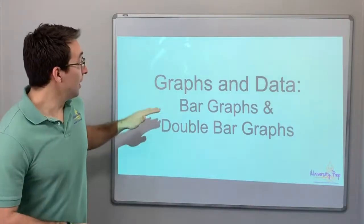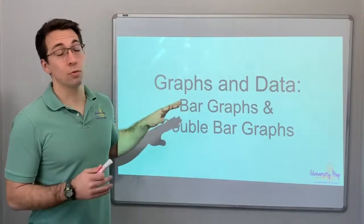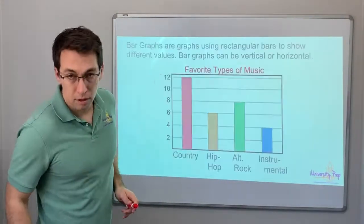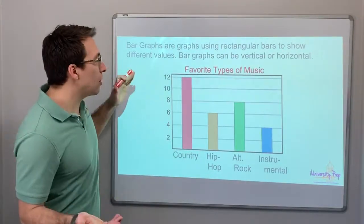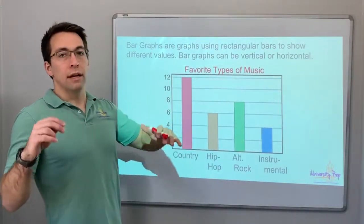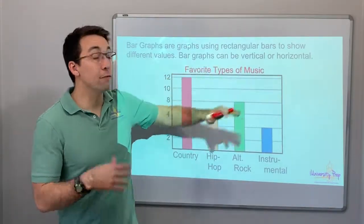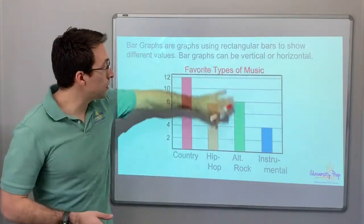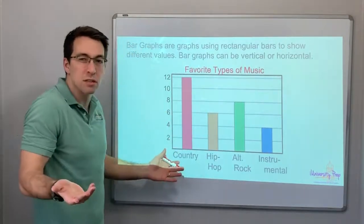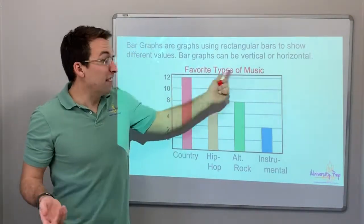Hey everyone, graphs and data! We're talking about bar graphs and double bar graphs today. A bar graph is a graph that uses rectangles — rectangular bars — to show different values. Bar graphs can be vertical, or they can be horizontal when we go sideways.